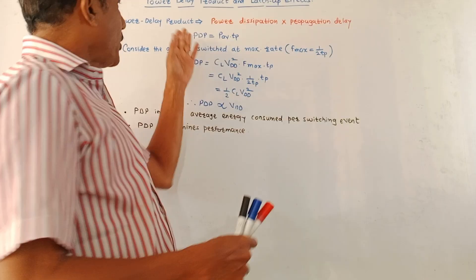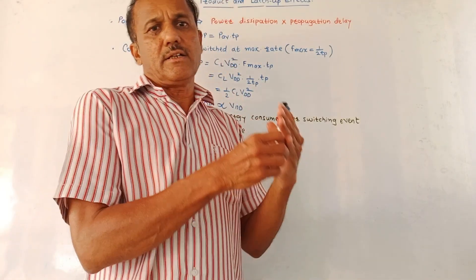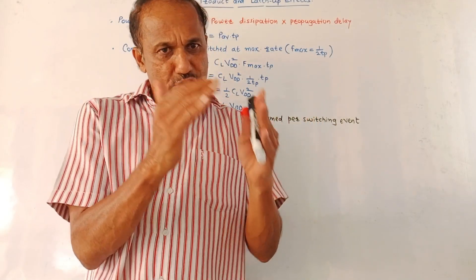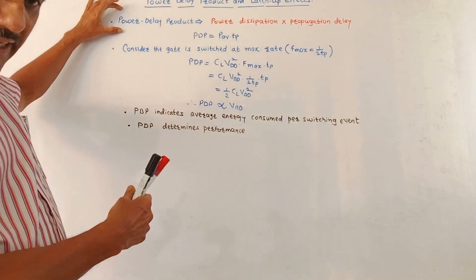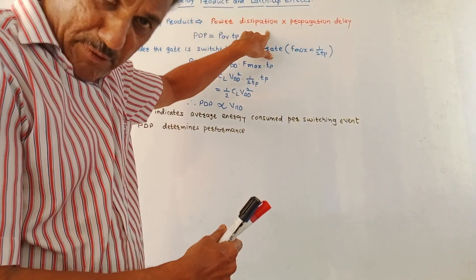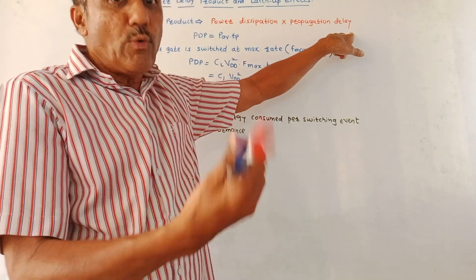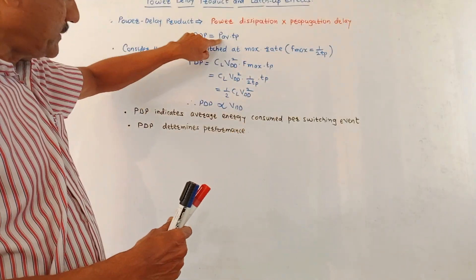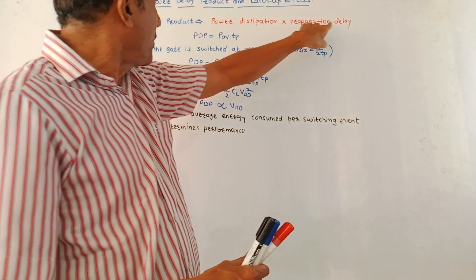Next is the concept of power delay product. Basically, this power delay product is used to decide the performance of the given circuit as well as it gives an idea about the transition period from 0 to 1 or 1 to 0. In simple language, power delay product is the product multiplication of power dissipation in the circuit and propagation delay TP. Just now we discussed the concept of the propagation delay. PDP, power delay product, is P average, that is average power dissipation, into TP. TP stands for propagation delay.